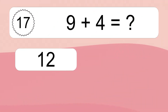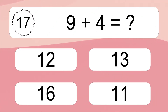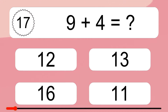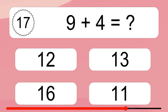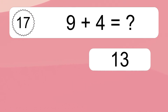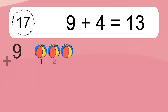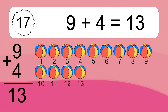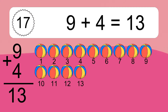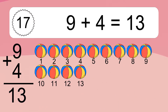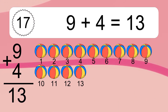Nine plus four equals what? Nine plus four equals thirteen. Let's count it: one, two, three, four, five, six, seven, eight, nine, ten, eleven, twelve, thirteen.